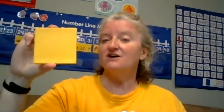Here is a rectangle. We know it's a rectangle because it has four sides and four vertices. Here is a square. We know this is a square because it has four sides and four vertices that are the same size.